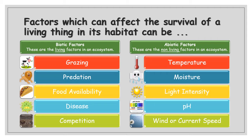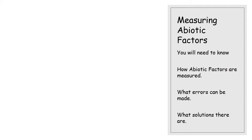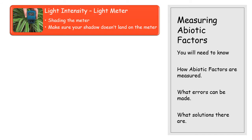One of the things we'll do when we're back in school is think about measuring abiotic factors. Different environments around school will differ in terms of their abiotic factors — we can find that out by measuring them. For National Five you will need to know how abiotic factors are measured, what errors could be made during measurement, and what solutions you could give to those problems. Light intensity is measured by a light meter.